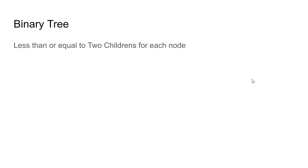Binary tree: less than or equal to two children for each node.